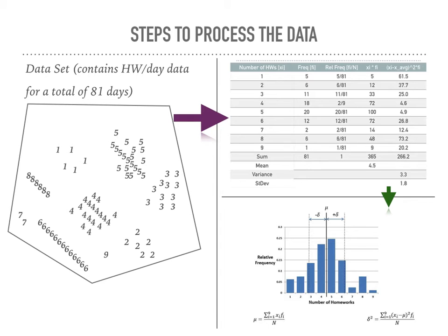About probability - these decimals tell you how likely it is that you're going to get that event. Again, in bin 5, I get 0.24. So 0.24 out of 1, or 24%, is the chance I have to get 5 homeworks.